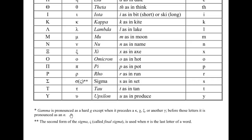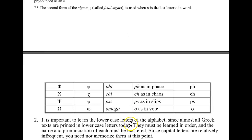For example, double gamma sounds like NG in English. Following upsilon comes phi — pronounced PH as in phase. Chi, which looks like an X, is pronounced CH as in chaos. There's no difference in the Erasmian pronunciation of kappa and chi. Xi is pronounced like the PS in slips — both the P and S sound are pronounced. Omega is the O as in vote, so it's a long sound.